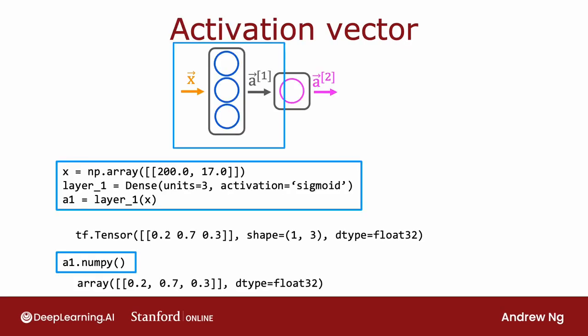Going back to the code for carrying out forward propagation or inference in the neural network. When you compute A1 equals layer 1 applied to x. What is A1? Well, A1 is actually going to be, because there's three numbers, a 1 by 3 matrix. And if you print out A1, you will get something like this. It's tf.tensor with a shape of 1 by 3. 1, 3 refers to that this is a 1 by 3 matrix. And this is TensorFlow's way of saying that this is a floating point number, meaning that it's a number that can have a decimal point represented using 32 bits of memory in your computer. That's what a float32 is.